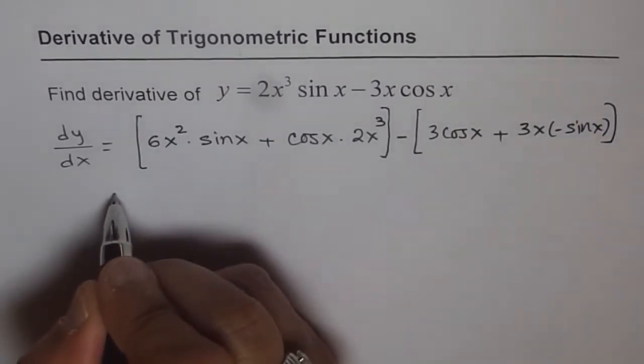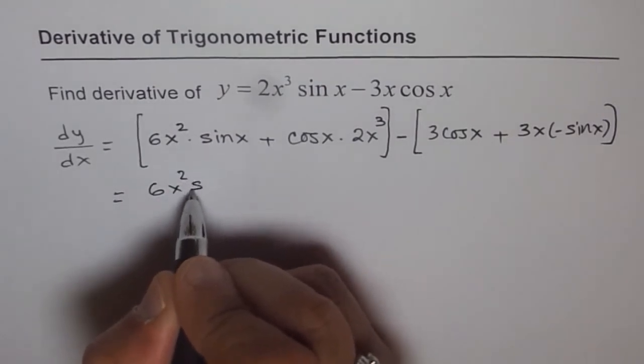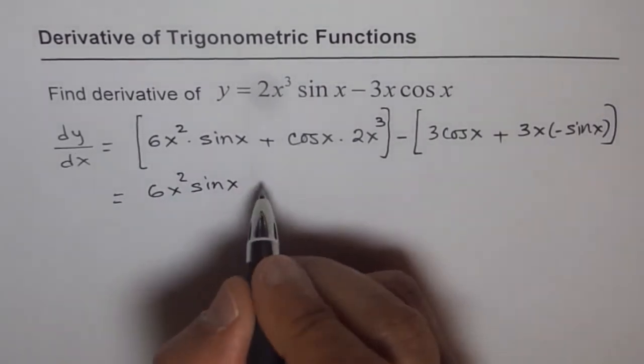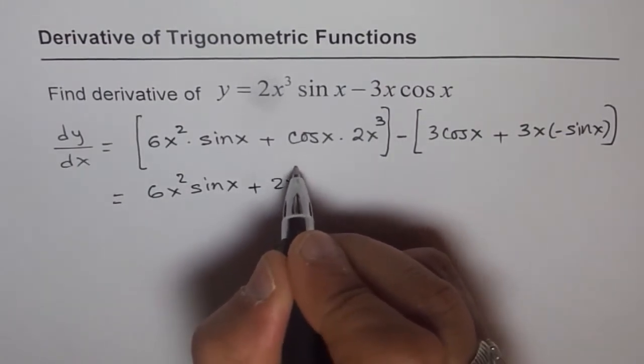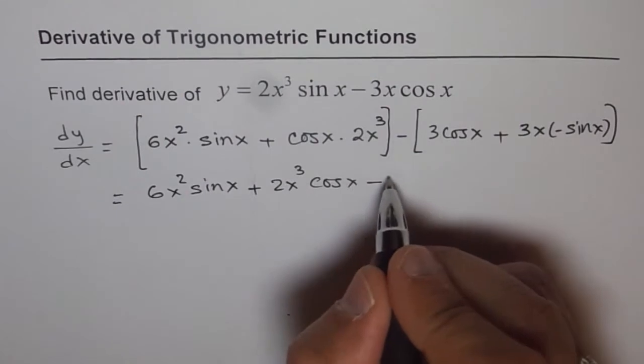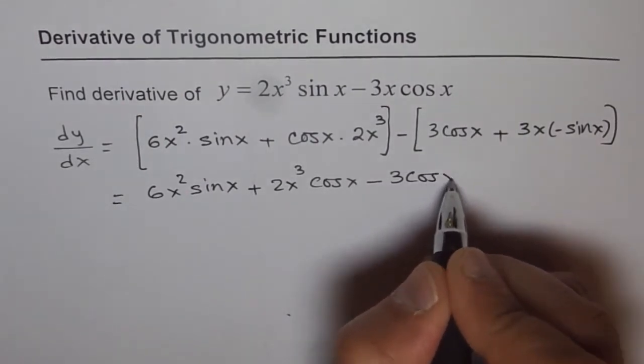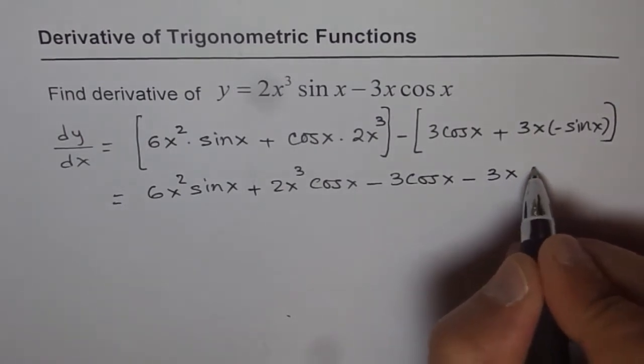We can simplify this, we get 6x squared sin x plus 2x cubed cos x minus 3 cos x minus 3x sin x.